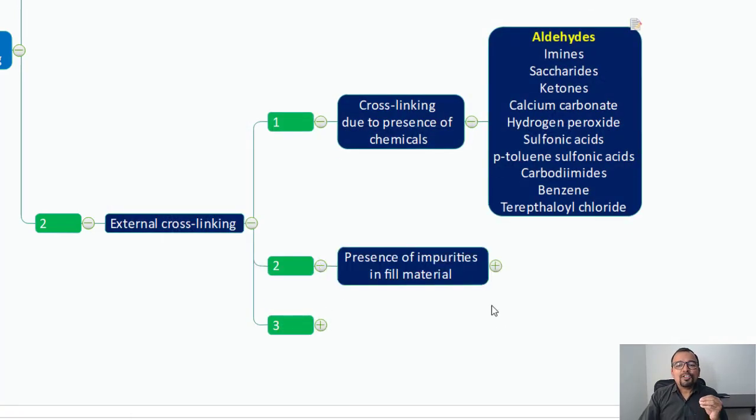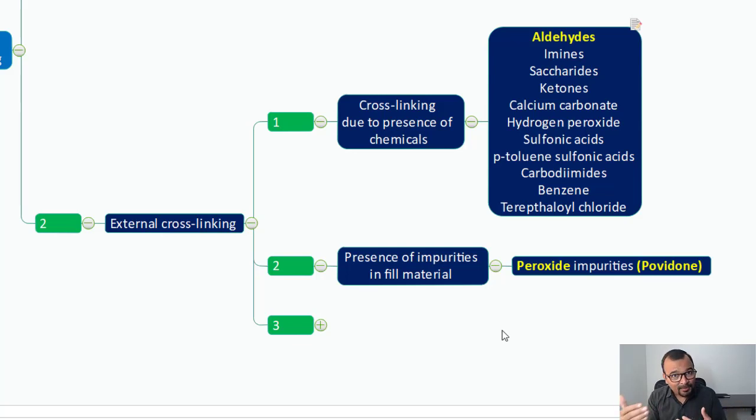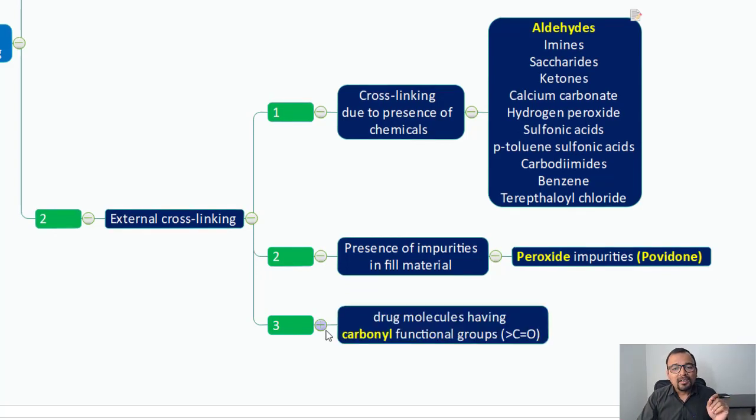The presence of impurities in fill material. If impurities like peroxide are present in your fill material, for example, povidone is the excipient that you are using for your capsule filling, this povidone comes with peroxide, and if there is peroxide available, you can end up getting cross-linking. Drug molecules having carbonyl functional groups also tend to form cross-linking with gelatin. These are the two important sources why you will end up getting cross-linking.